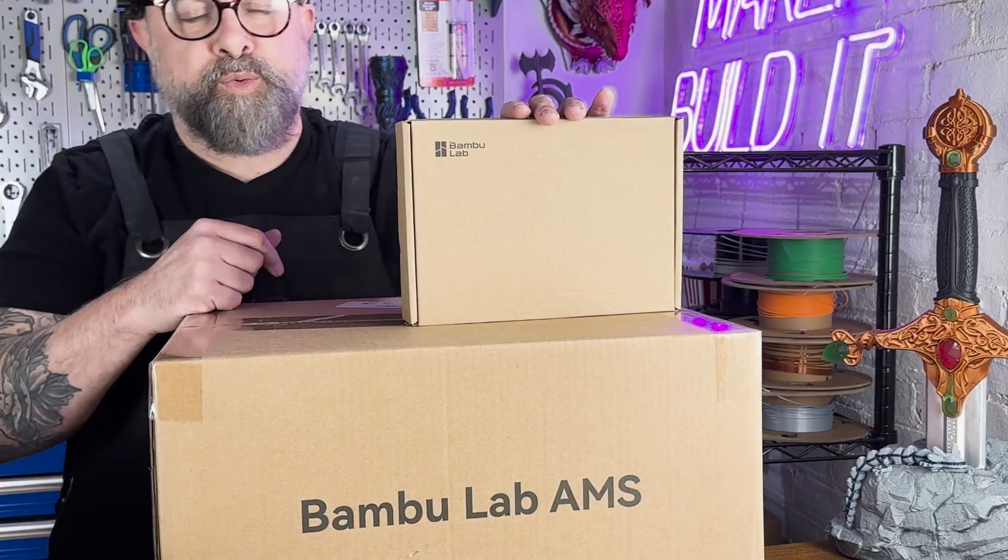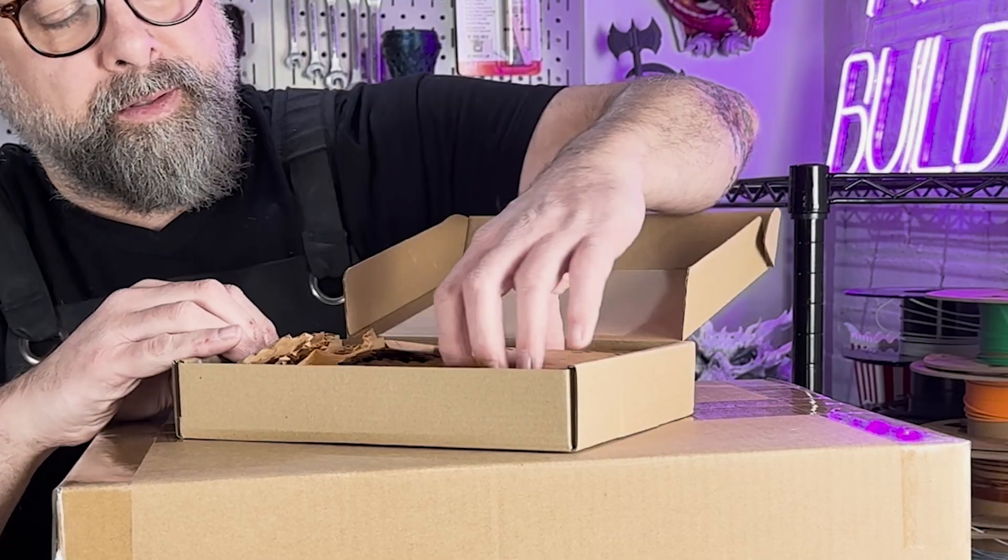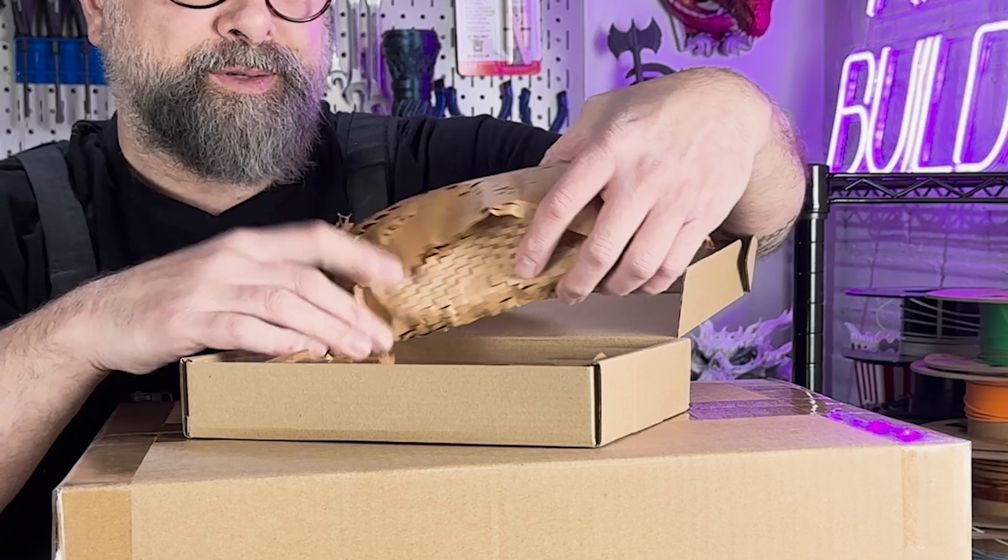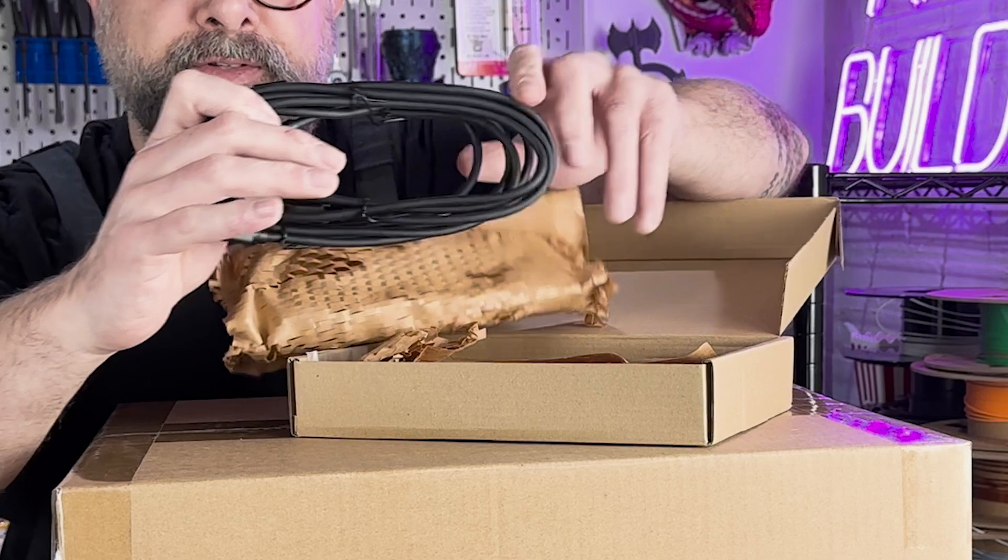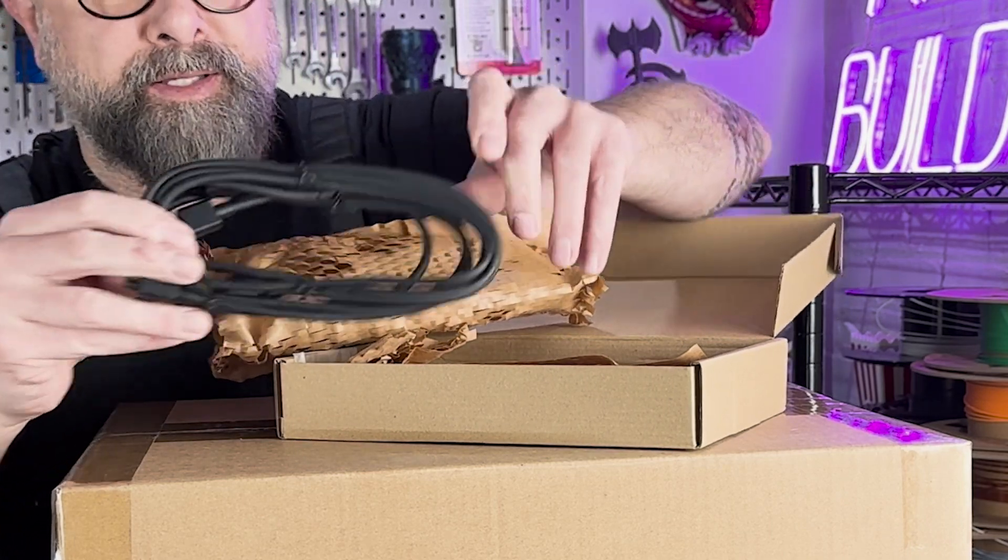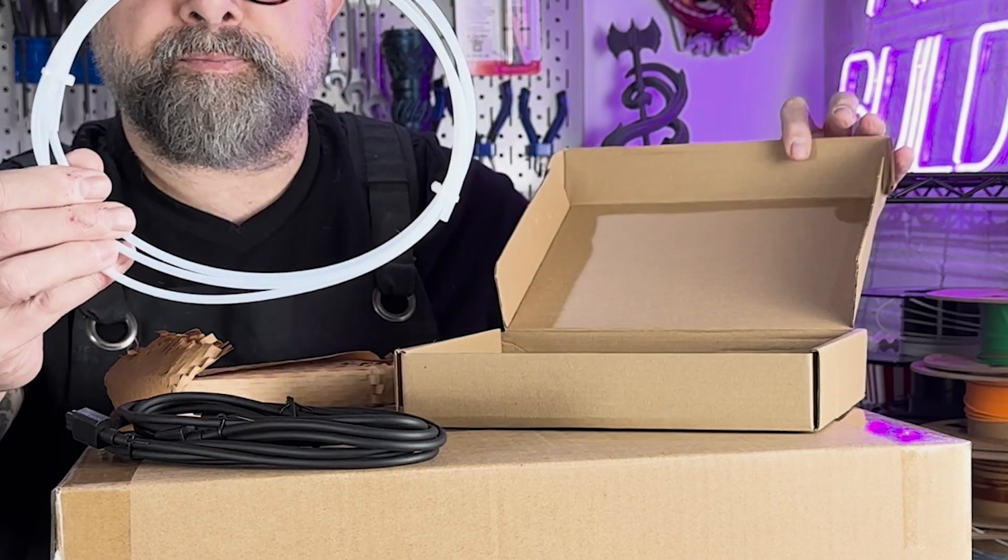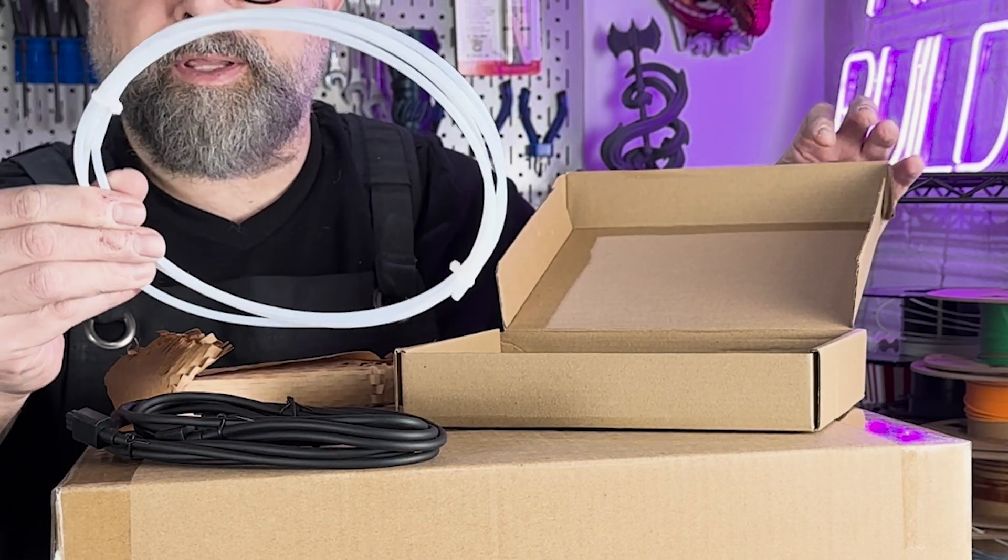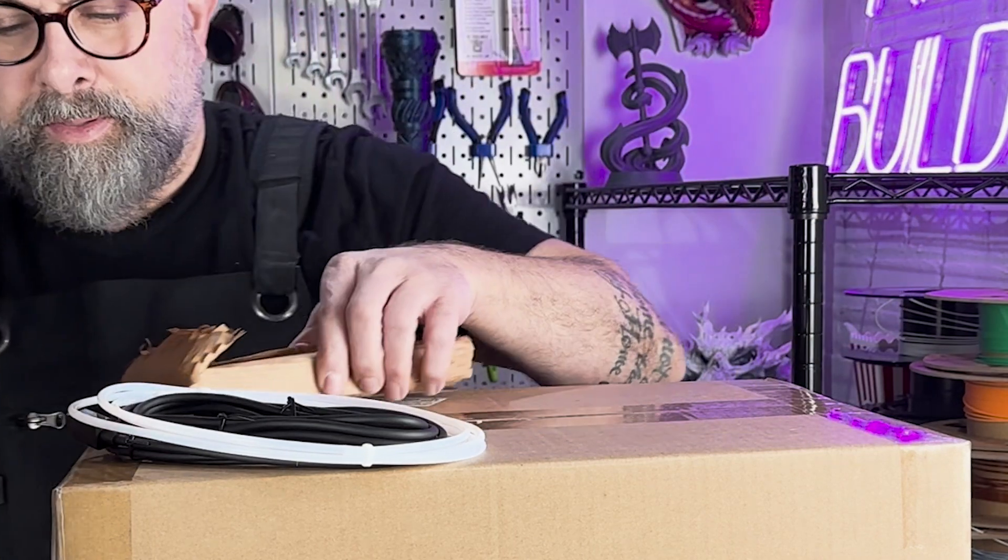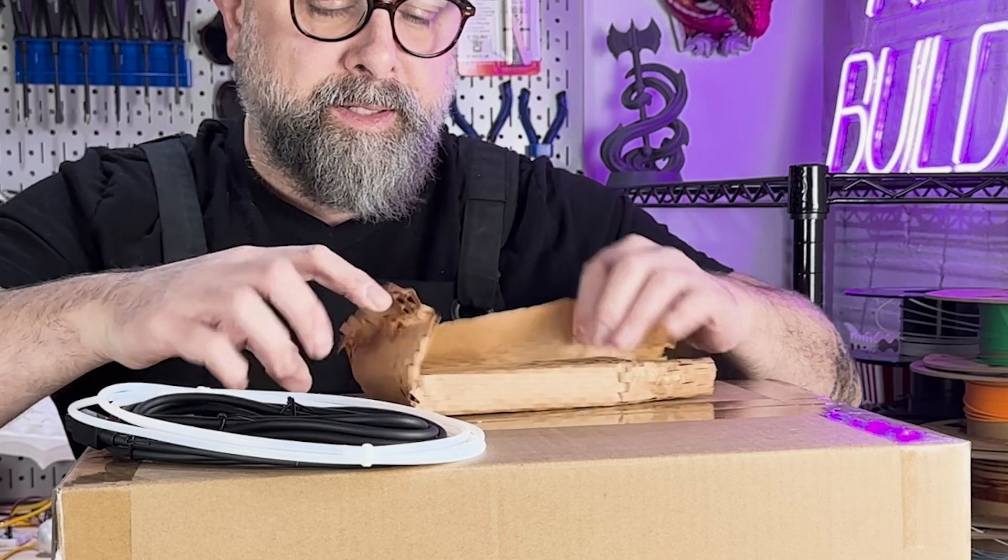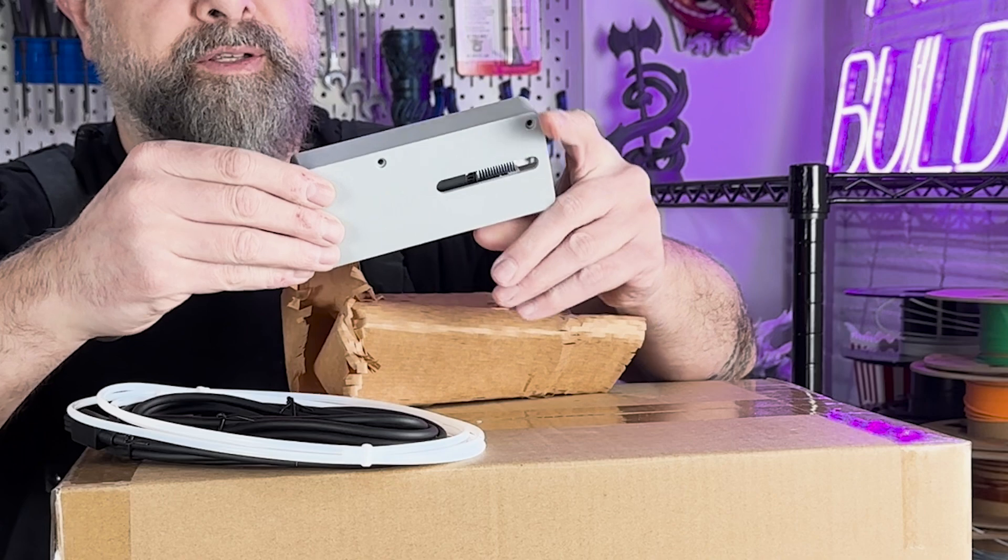So let's see what comes into each one of these boxes. Not the most secure wrapping, but we got some cables for our AMS to connect them together. We got some tubing. Not sure how long that is, but it looks pretty decently long. We got the screws to attach the hub. And this should be the hub itself. And there is our hub.